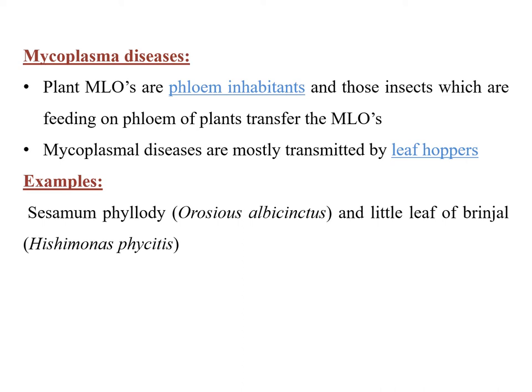Mycoplasmal diseases transmitted by insects: plant mycoplasma-like organisms are phloem inhabitants. Insects capable of piercing up to the phloem can transmit these MLOs. Mycoplasma diseases are mostly transmitted by leafhoppers because leafhoppers feed on phloem tissue. Examples include Orosius albicinctus transmitting little leaf of brinjal, and Hishimonus phycitis.